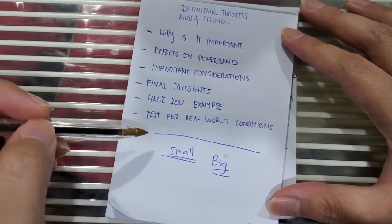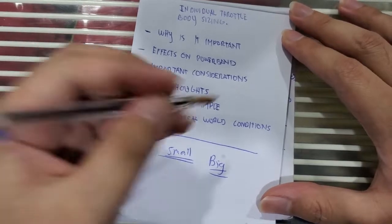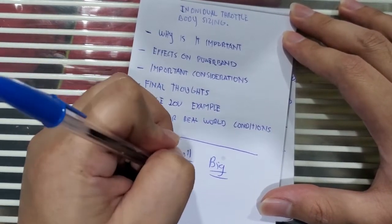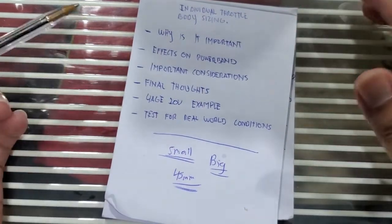So I'll be going into the 4AG example now. From the factory, Toyota chose a 45 millimeter size throttle body for the 20 valve blacktop engine.